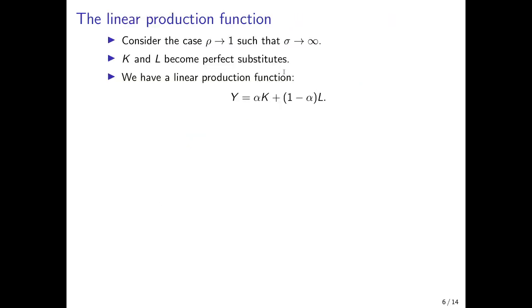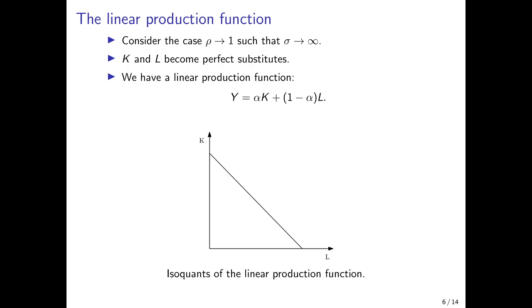Now let's illustrate the special cases, starting with the linear production function — the case in which rho tends to 1, the elasticity of substitution tends to infinity, and capital and labor become perfect substitutes. We can draw the isoquants of the linear production function, showing the combinations of workers and capital needed to produce a certain amount of output. These move along a straight line, meaning we can substitute capital and labor according to the ratio given by alpha and 1 minus alpha — always a perfect type of substitution.